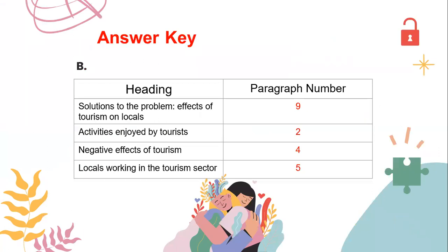And now part B: the solutions to the problem — effects of tourism on locals — refers to paragraph number nine. The activities enjoyed by tourists is the heading for paragraph number two. Negative effects of tourism is the heading for paragraph number four. And last but not least, locals working in the tourism sector is the heading for paragraph number five.